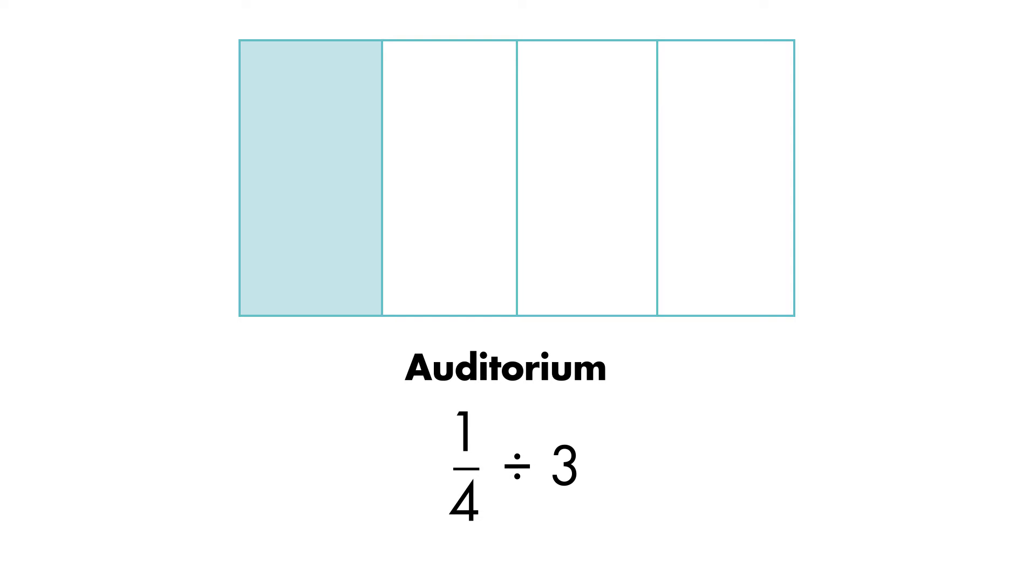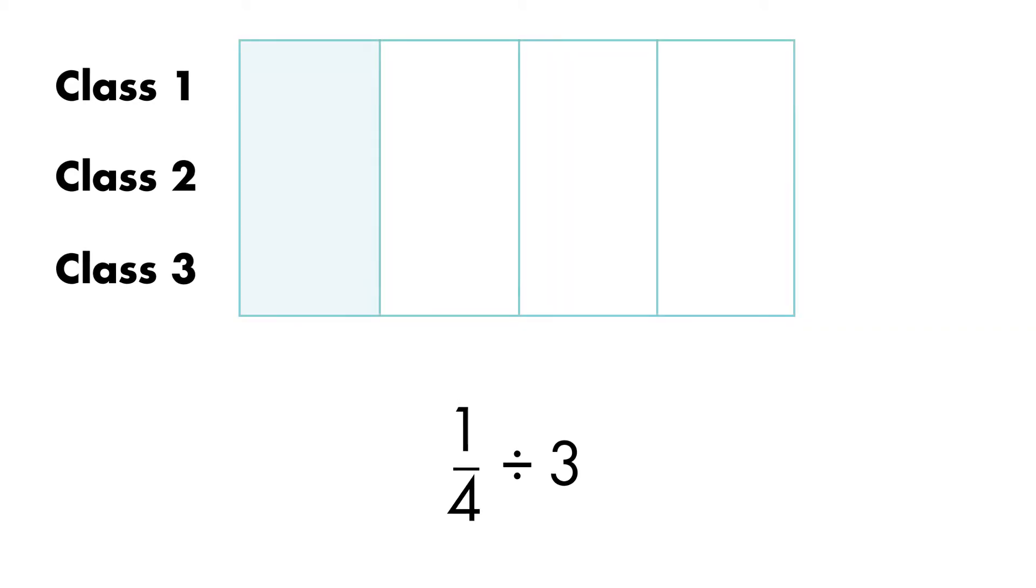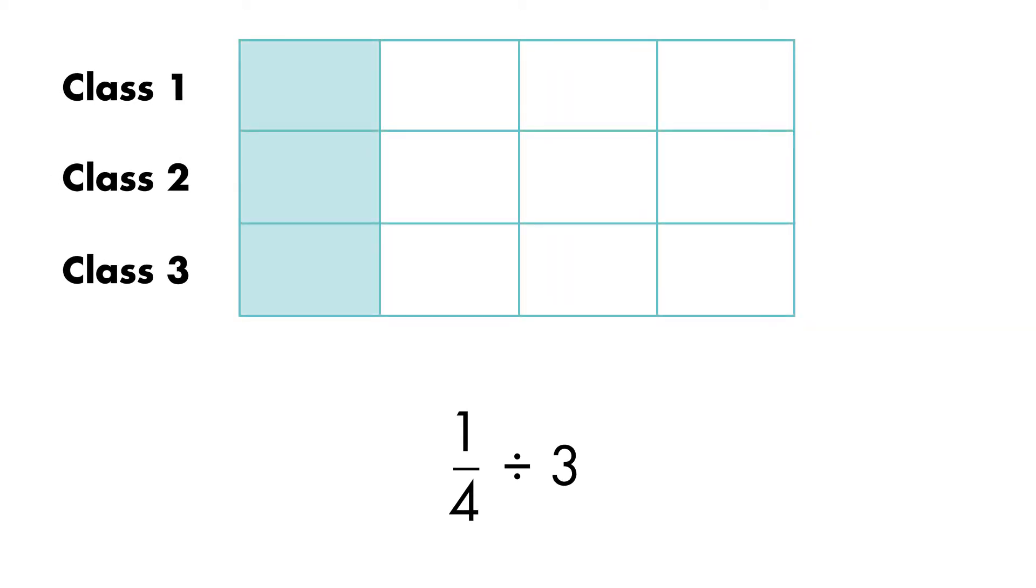This model shows one-fourth. We can model one-fourth divided by three by drawing horizontal lines to divide the fourths into three equal parts. In each of the three sections we made, how many parts are shaded?